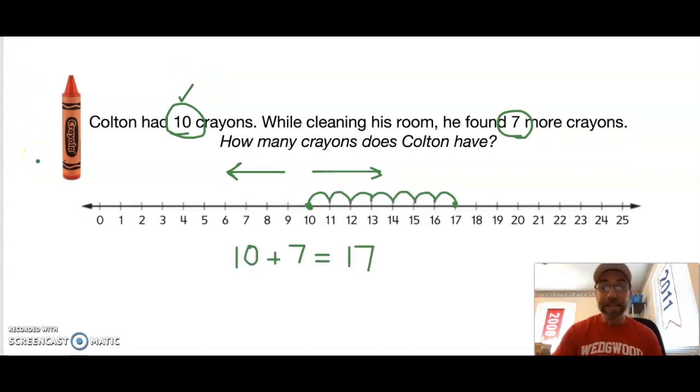Alright, let's see if we got the same answer. I started at 10, I hopped seven times, and I landed on 17. How many crayons does Colton have? 17 crayons. 10 plus 7 equals 17. Awesome job! Thumbs up if you got that answer. Wow, lots of thumbs up in the air, good job!